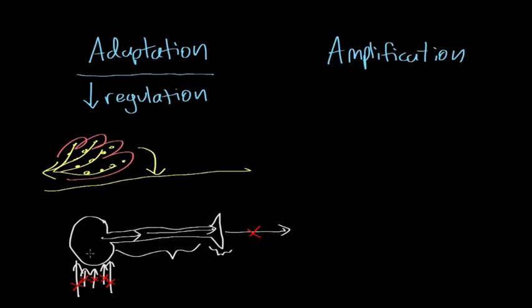Adaptation is different cells in your body responding to a change in a stimulus. If the stimulus is no longer changing, then there's no longer any information being sent to the brain.